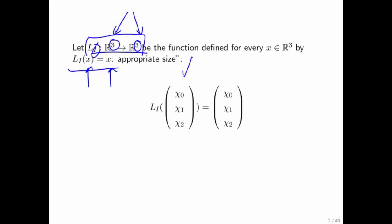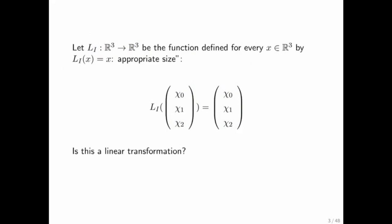So if we expose the components of the vectors that go in and out, what you see is that the vector that goes in is the vector that comes out. The question is: is this a linear transformation? And if it is, what matrix represents it? We're going to turn this around — we're going to try to come up with a matrix that might represent it, and then answer the question of whether it is a linear transformation by looking at that matrix.